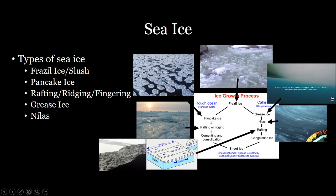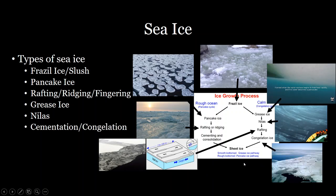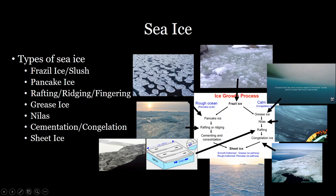Eventually those layers that get pushed up onto each other will go through congelation — multiple layers freezing to each other — forming into sheet ice, which is complete coverage of relatively thick ice over the expanse of the ocean.